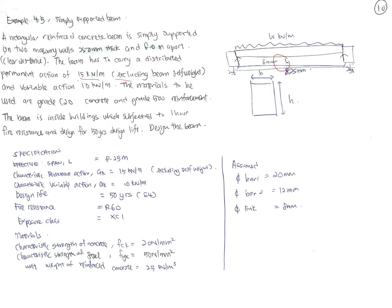The beam carries a distributed permanent action of 15 kN/m (excluding self-weight) and a variable action of 10 kN/m. Materials: Grade C20 concrete and Grade 500 reinforcement. The beam is inside a building subjected to one hour fire resistance (R60) and designed for a 50-year design life. The total beam length including bearing on the wall is 8285 mm.